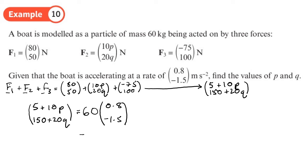times by the acceleration which is 0.8 and negative 1.5. Right so let's work out what the right hand side is. So if we work out 60 times by 0.8, we're going to get 48.